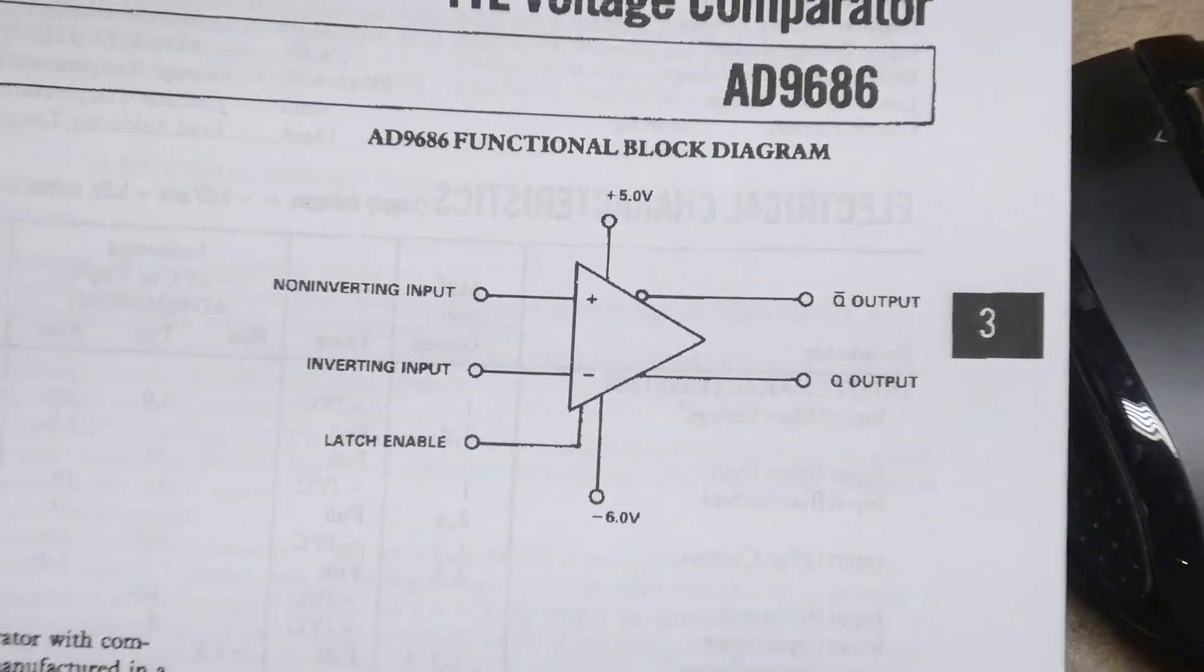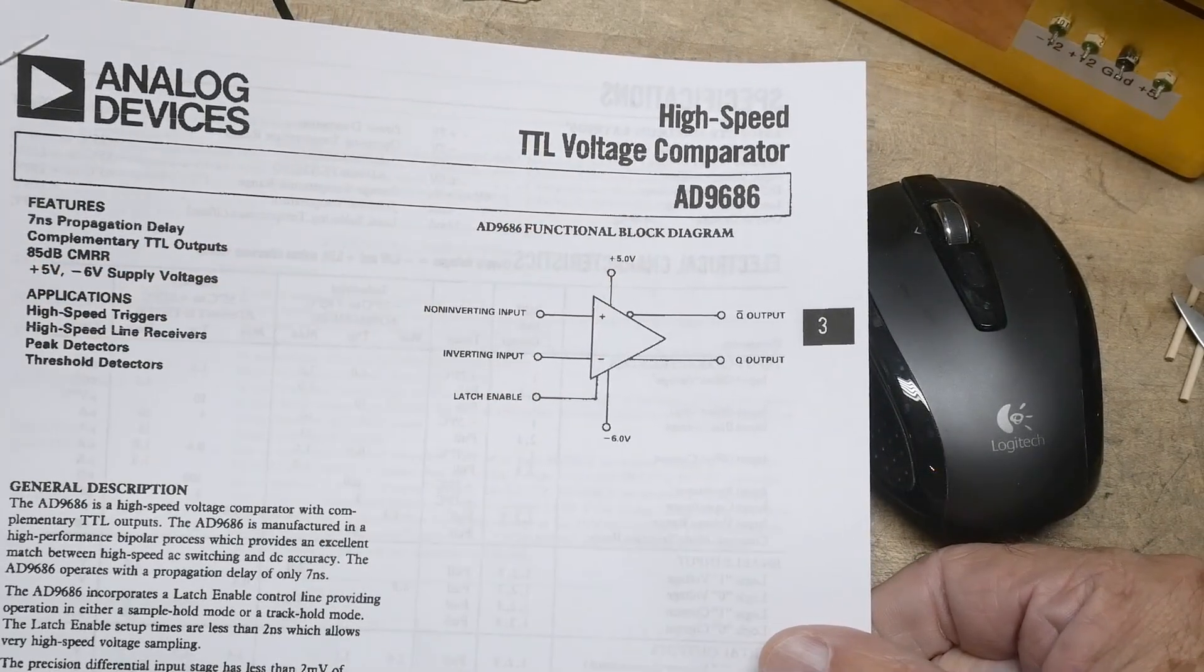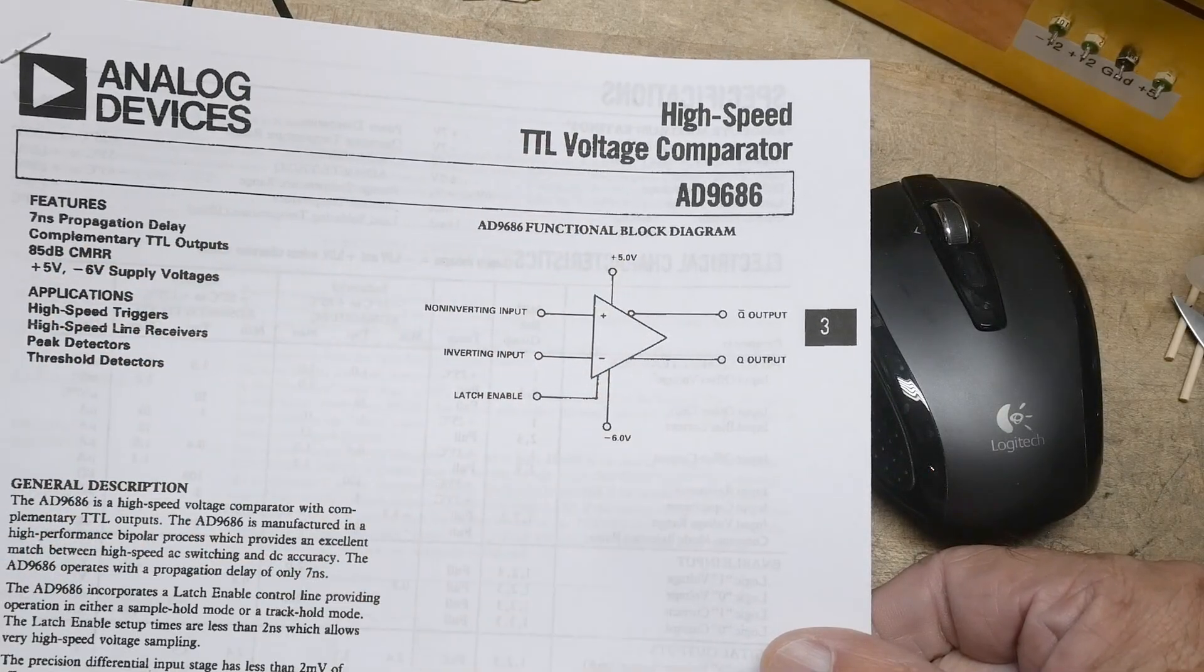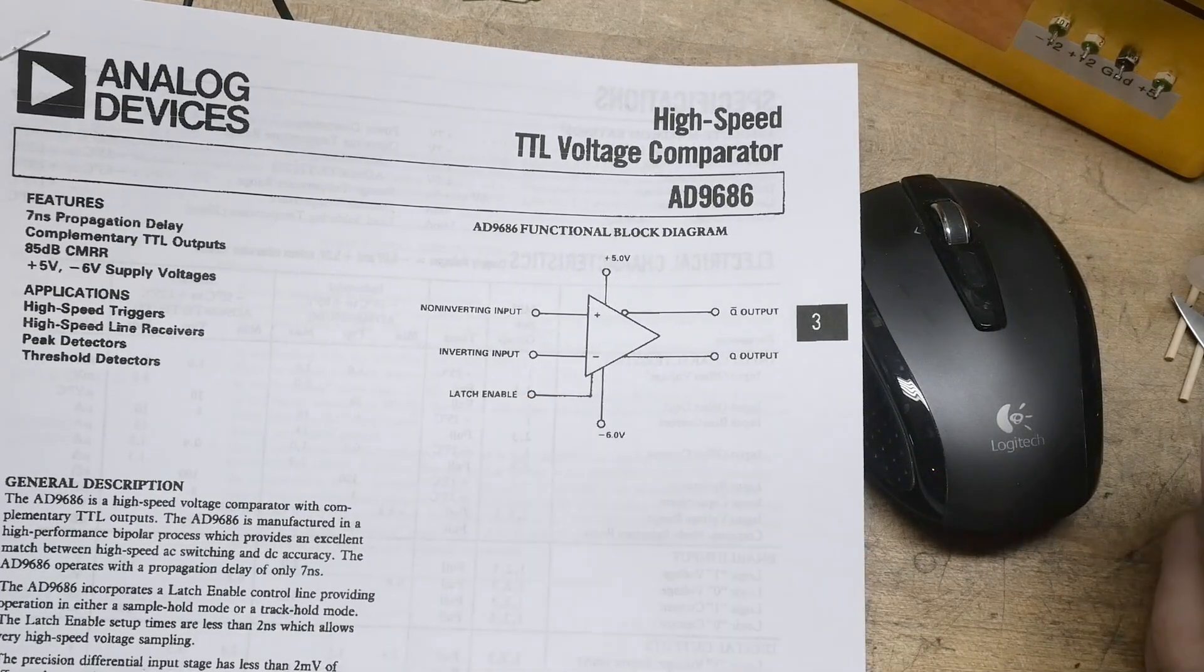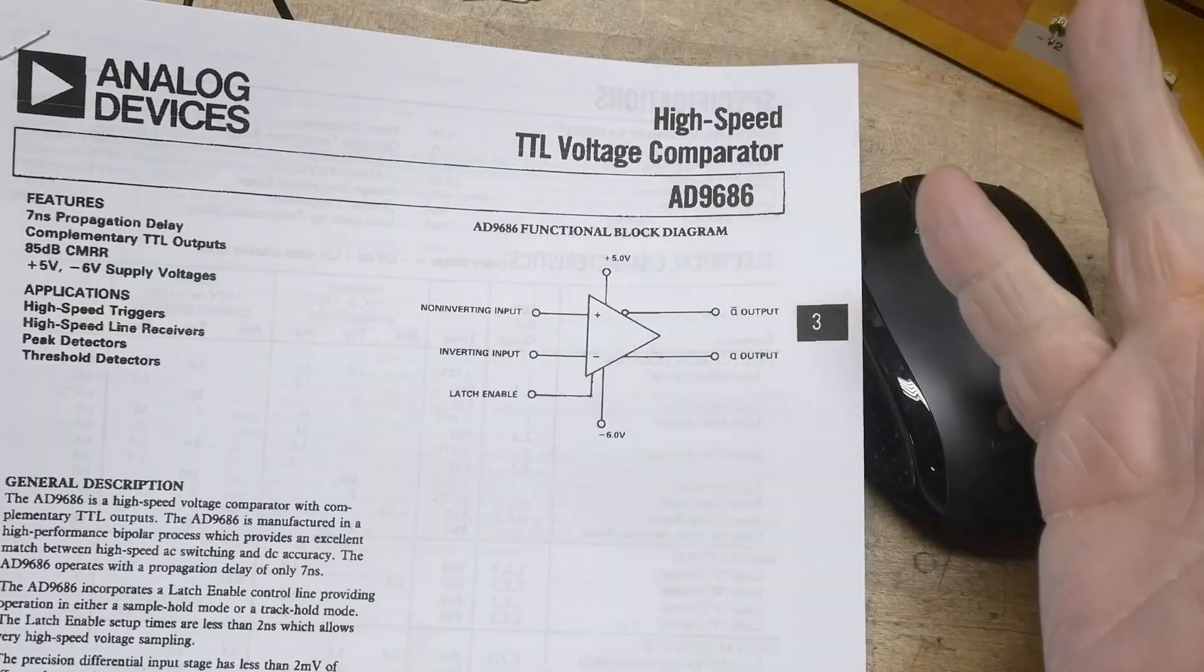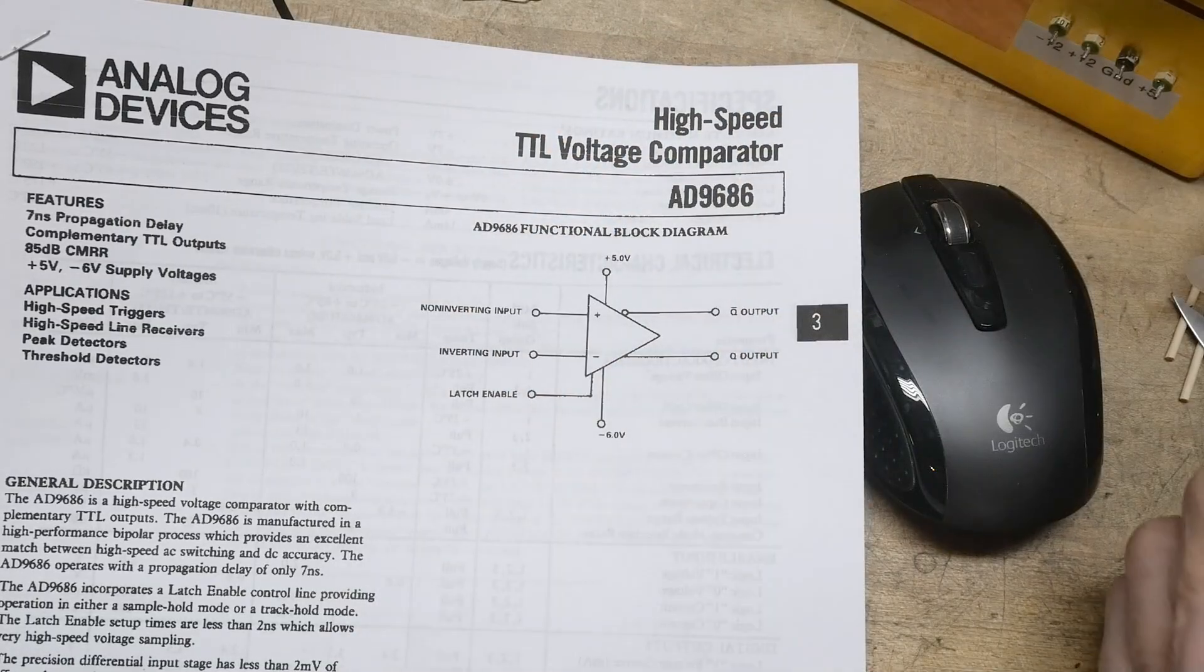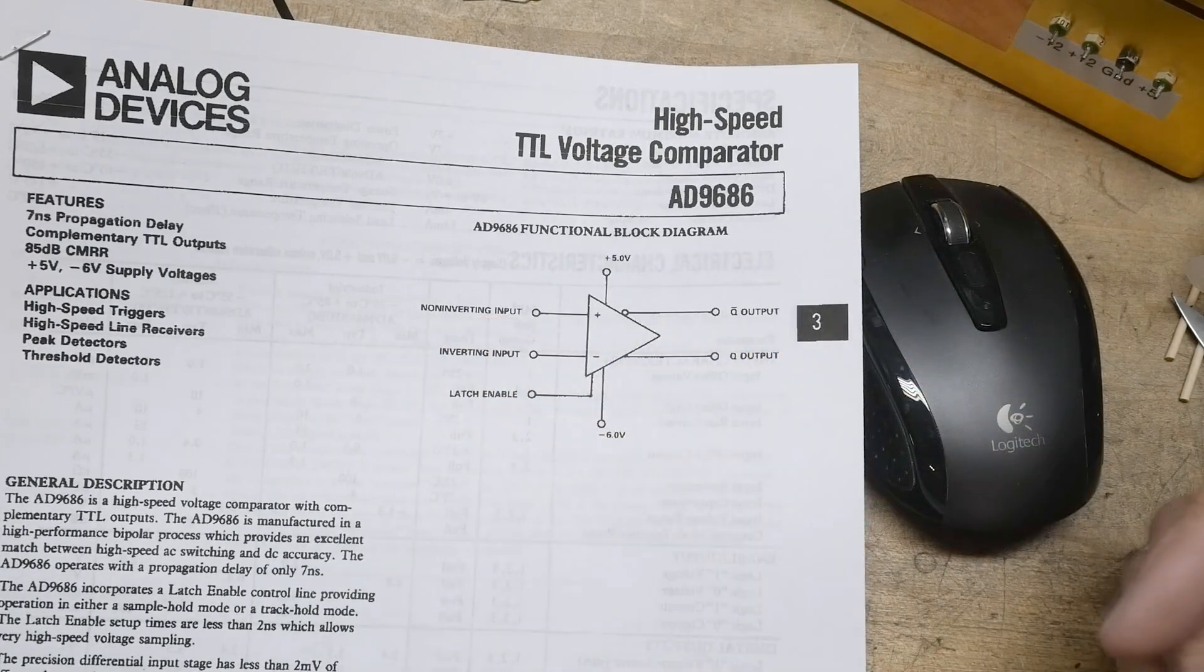Let's see. Here we go. It is a high-speed TTL voltage comparator. What that means is the output is TTL compatible. So here they're showing plus 5 volts and negative 6 volts. And then there's a latch enabled. So the output swings between ground and 5 volts. So it's TTL compatible. But the input can go plus or minus.